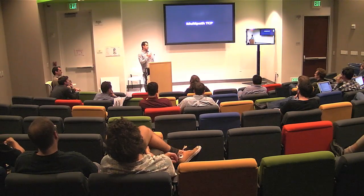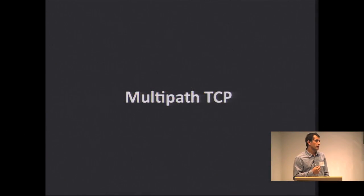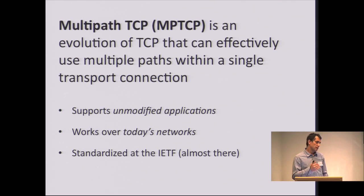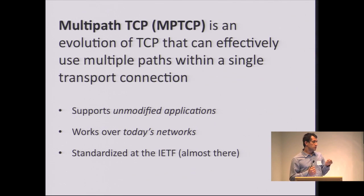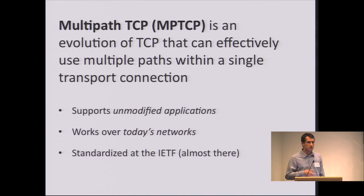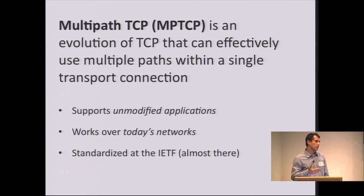This brings me to multipath TCP. What we think we need to do is evolve TCP into something that can use multiple paths natively. Multipath TCP is just an evolution of TCP that allows a single connection to spread over multiple paths. We built this from the beginning so that applications do not have to change — they use the same socket interface, they think they're using TCP, and underneath the stack opens multiple connections if it sees fit. This works over today's networks, and standards are coming out in a few months.